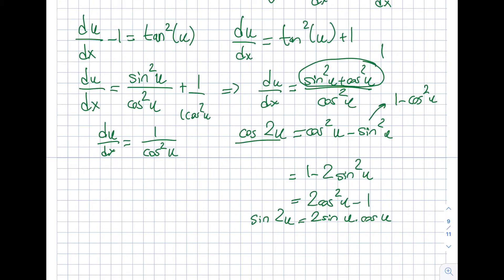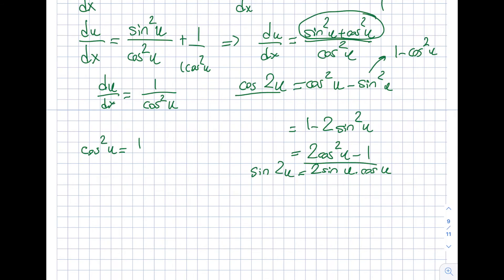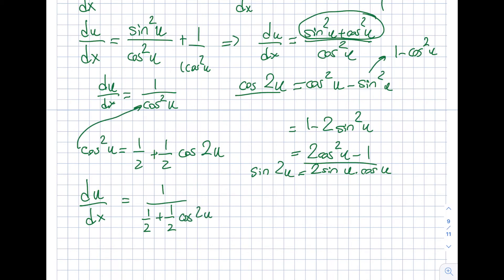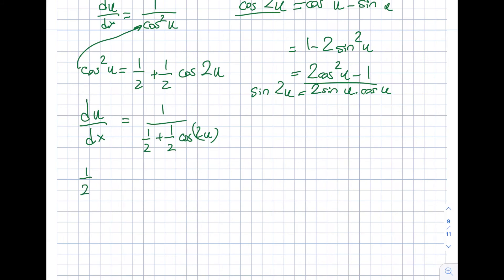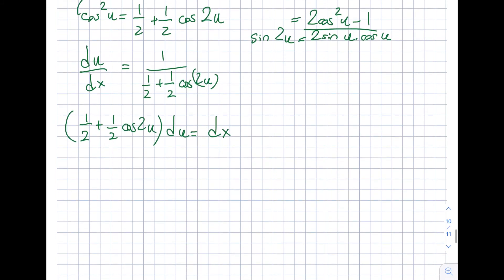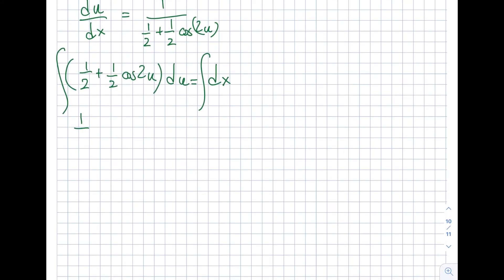Substituting cos²(u) = 1/2 + (1/2)cos(2u) into du/dx = 1/cos²(u) and separating variables gives: du / (1/2 + (1/2)cos(2u)) equals dx. Integrating the left side: the integral of 1/(1/2 + (1/2)cos(2u)) du gives u/2 plus (1/4)sin(2u) on the left, equal to x + C on the right.